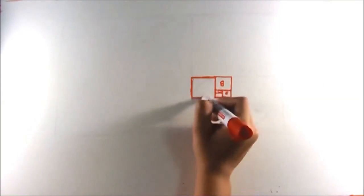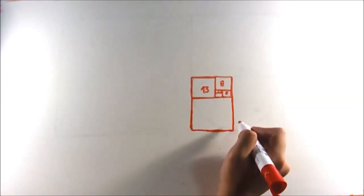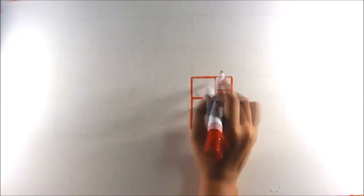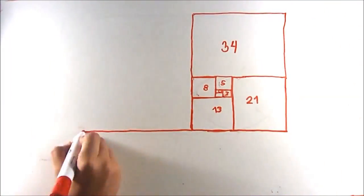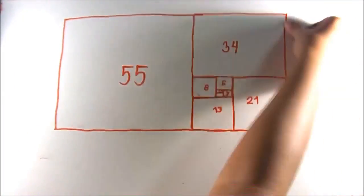When illustrated, the Fibonacci sequence creates an interesting spiral. Now, this spiral is common, especially in nature.